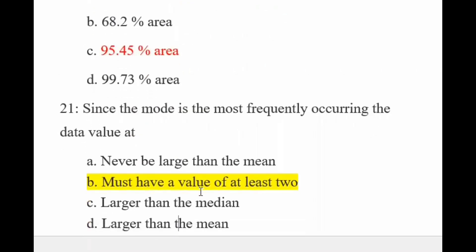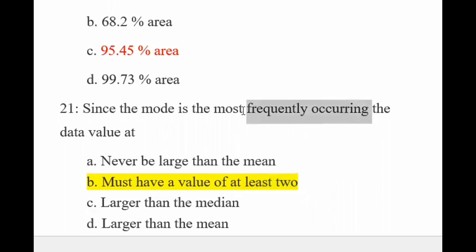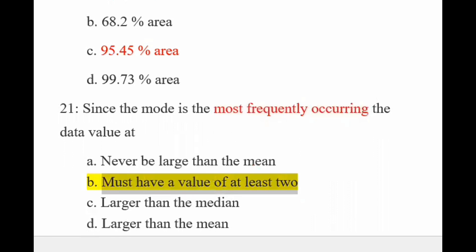Since the mode is the most frequently occurring data value — hamare paas mode most frequently aati hai. Ismein: mode can never be larger than mean — nahi, ziyada bhi ho sakta hai. Larger than median — bhi ho sakta hai ya nahi bhi. Larger than mean — bhi ho sakta hai. Must have a value appearing at least two times — most frequently ka matlab hai ki woh value kam se kam do baar zaroor aani chahiye jise hum mode consider karte hain.